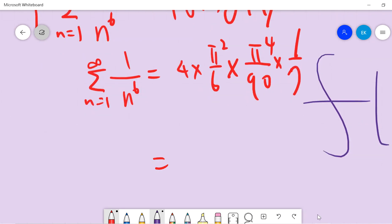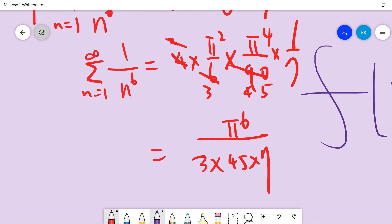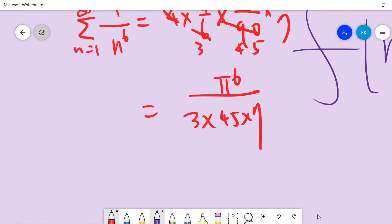So what is this? You guys, let's compute. So 2 over 45, so we get pi to the 6, and 3 times 45 times 7. And then if you compute carefully, you have 21 times 45, and you get pi. Let me compute carefully.